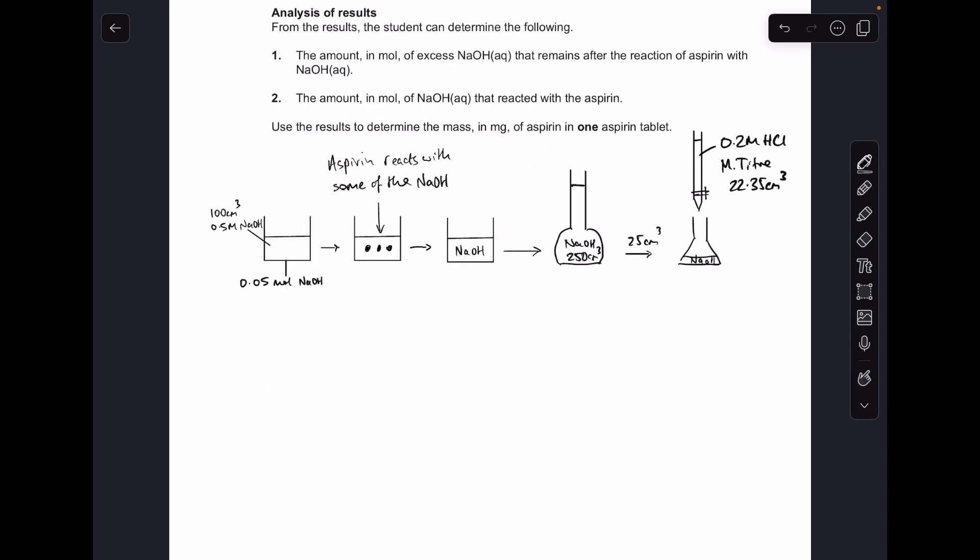Like I always do with these long-winded titration questions, I'll just draw out a sequence of pictures just to try and visualize what's happening. So on the left-hand side, we're starting with that 100 cm³ of 0.5 moles per dm³ NaOH. You'll notice that I've worked out the moles of NaOH in there: 0.05.